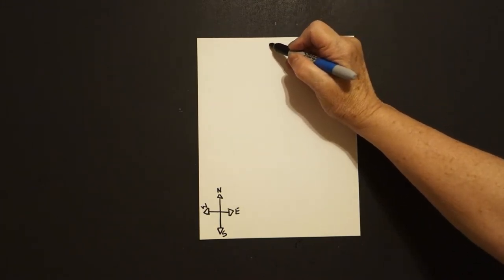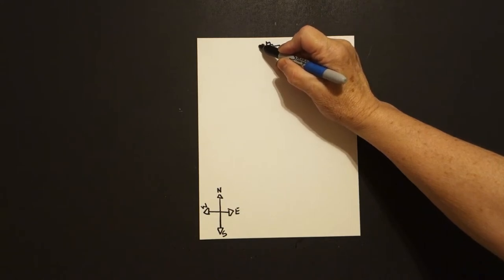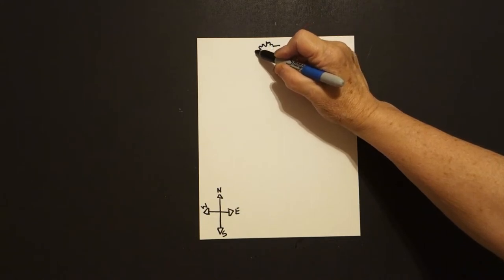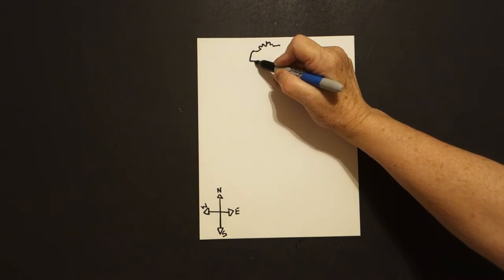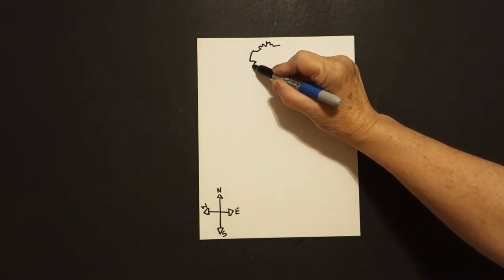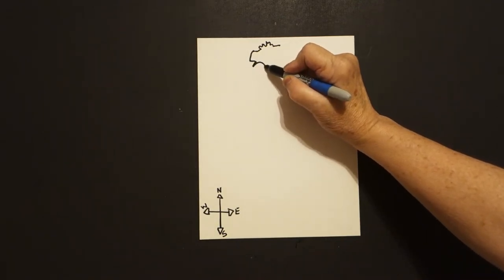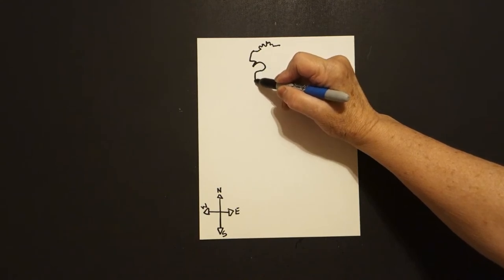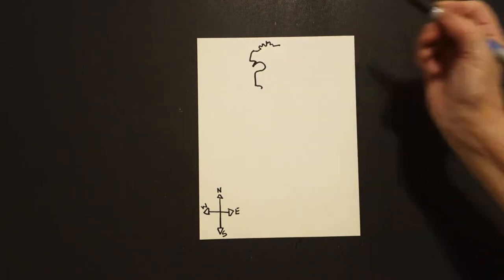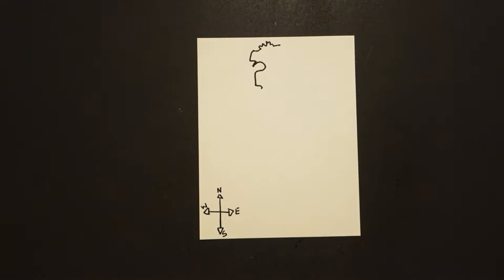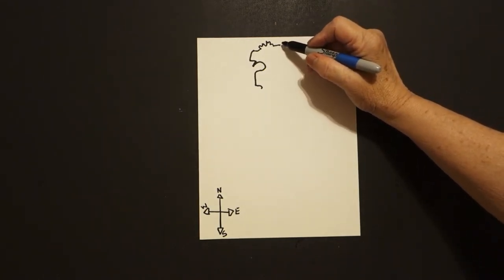Curve line up, up, down, curve line, curve line out, curve line down, curve line in, curve line out, big curve line, straight line down, little curve line in. We're going to draw a down. Okay, come back over here to the dot.